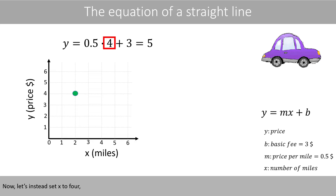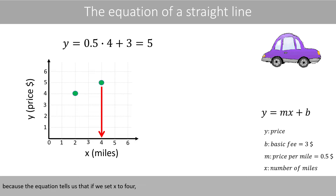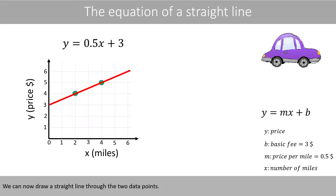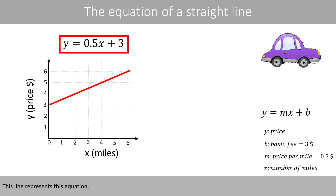Now let's instead set X to 4, which results in the following point, because the equation tells us that if we set X to 4, Y should be equal to 5. We can now draw a straight line through the two data points. This line represents this equation.